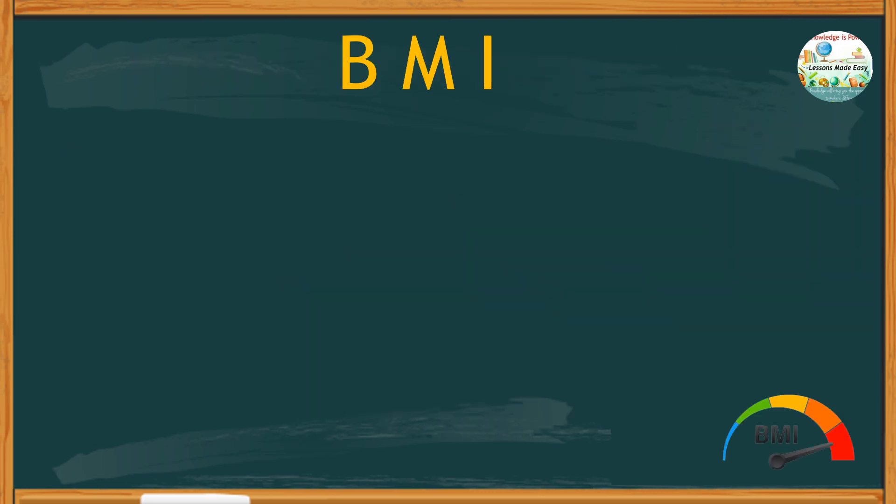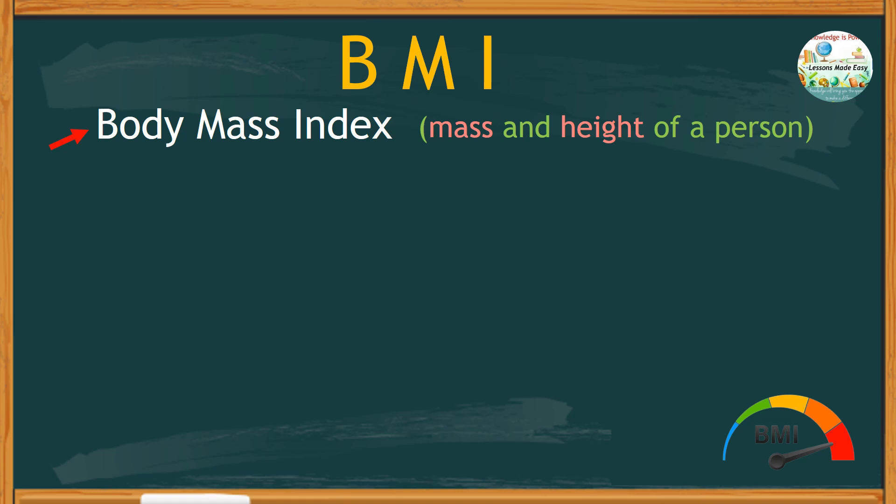The acronym BMI stands for Body Mass Index and its value is derived from the mass and the heights of a person. The unit used for BMI is kilograms per square meter.